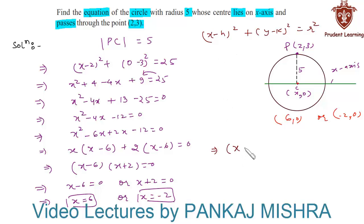This implies that we can have one of the circles as (x-6)² + (y-0)² = 5², that is 25. And the other circle could be (x+2)² + (y-0)² = 25.